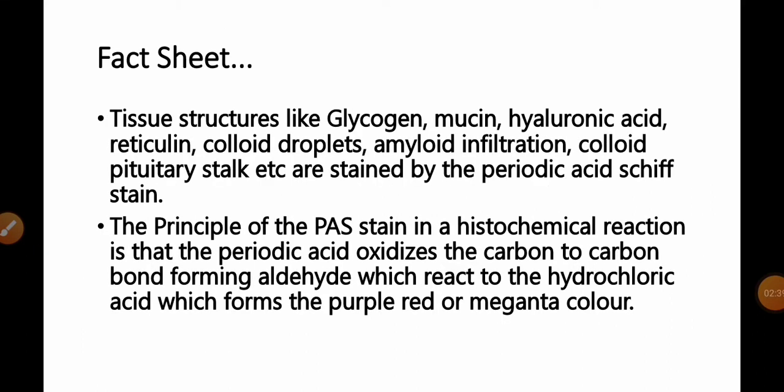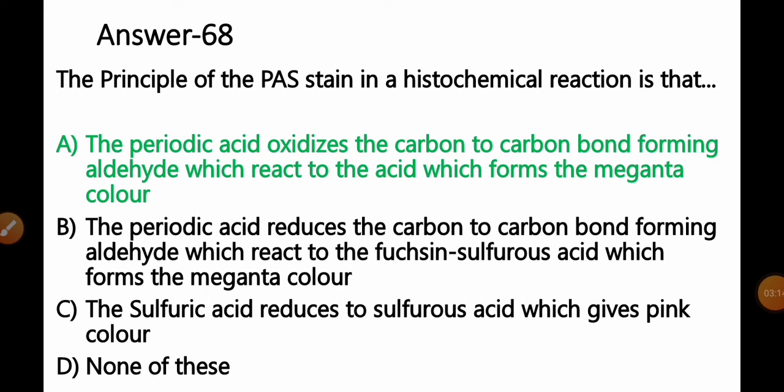PAS stain stains tissue structures like glycogen, mucin, hyaluronic acid, reticulin, colloidal droplets, amyloid infiltration, colloid pituitary stalk, etc. The principle of PAS stain is that the periodic acid oxidizes the carbon-to-carbon bond forming aldehyde, which reacts with hydrochloric acid to form a purple, red, or magenta color. So Option A is the correct answer for this question.